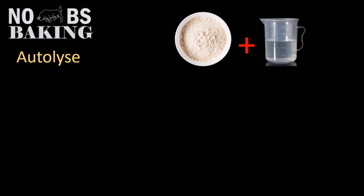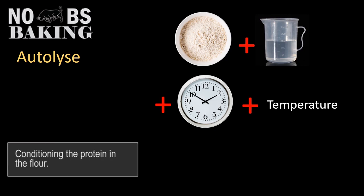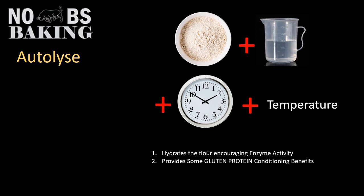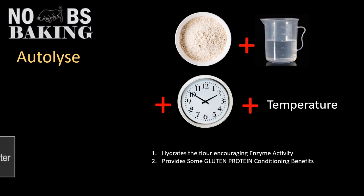Autolyse is really about flour and water being brought together and allowed to sit for a predetermined amount of time. There's a lot of mixed feelings on autolyse — some say it makes a big difference, others say it makes none. From a science standpoint, if you factor in both time and temperature, it does perform a function in conditioning your flour. Conditioning is a byproduct of enzyme activity and bacterial activity. What autolyse does is hydrate the flour, encouraging enzyme activity to start, and it provides some gluten protein conditioning benefits — but that is all subject to time and temperature.